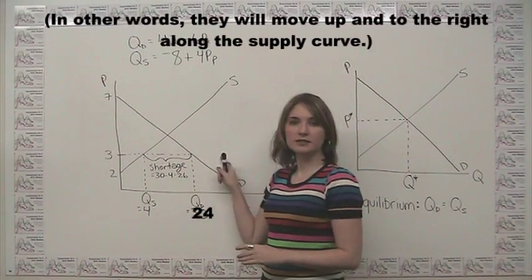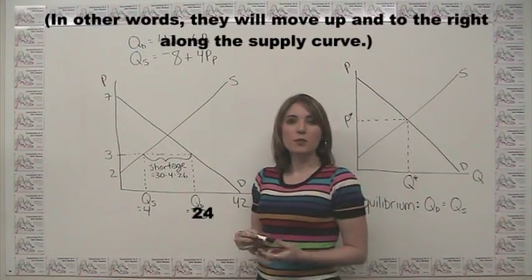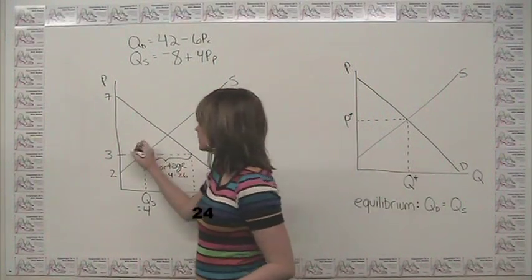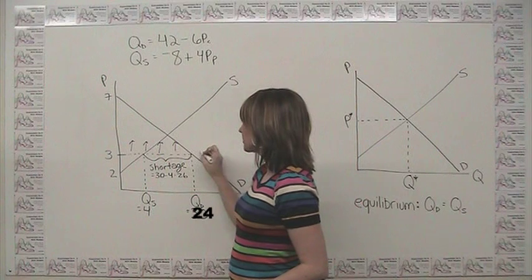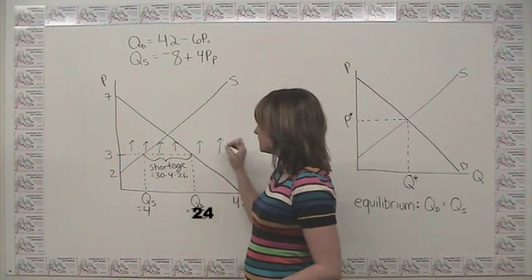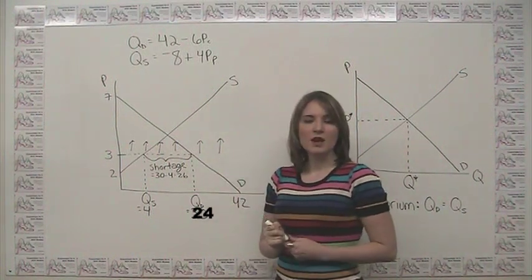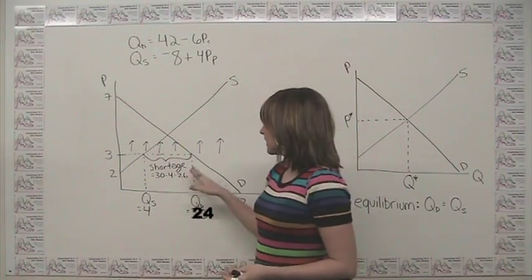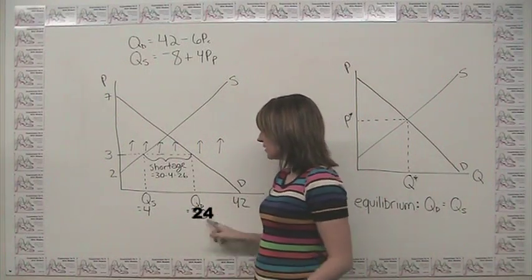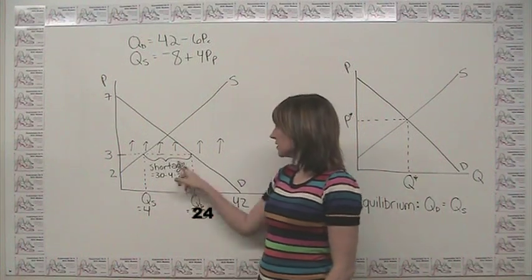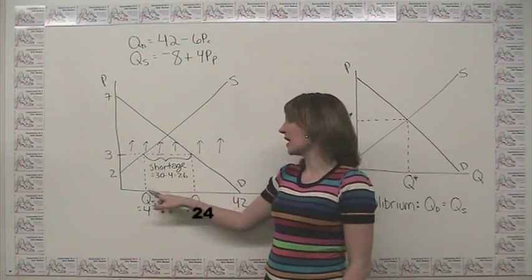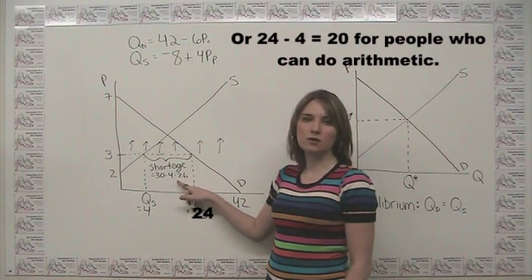So whenever there's a shortage, that's going to lead to upward pressure on prices. And you can see prices are going to move in this direction here. If we want to quantify the shortage, we could just say how far to the right of supply is our demand? Quantitatively here, the shortage can just be measured as 30 minus 4 or 26.